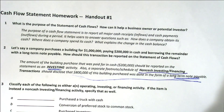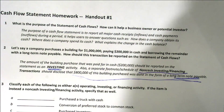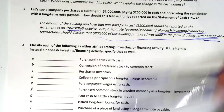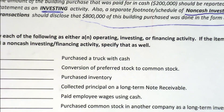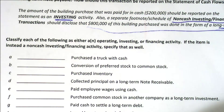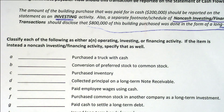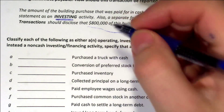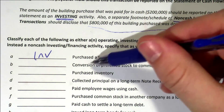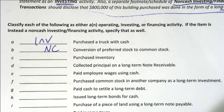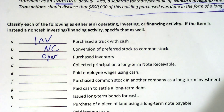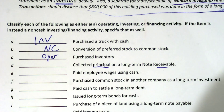Now we're to the meat and potatoes. I want to know if you can classify these cash flows as either operating, investing, financing, or non-cash investing and financing. Purchasing a non-cash asset — that would be investing. Conversion of preferred stock to common stock — that's non-cash. Purchased inventory — that would be operating, since it's something we do in our daily operations. Collected principal on a long-term note receivable — that would be investing.